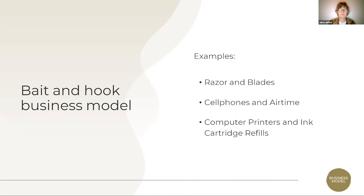Well-known examples: razors and blades — the razors are usually the cheaper part, but when you have to buy more blades, that's where you really have to look deeper into your pockets. It also used to be the case with cell phones and air time. A very obvious one is computer printers, which you buy at a fraction of the cost of the refills and cartridges you have to buy to be able to print anything in the long run.